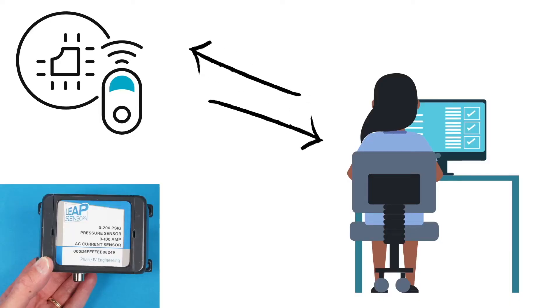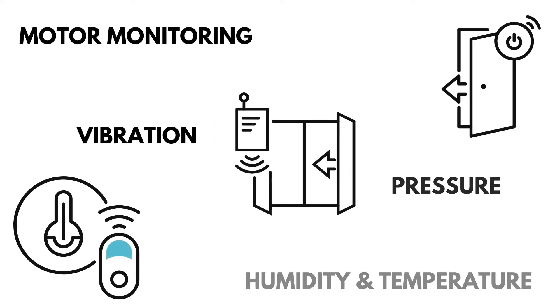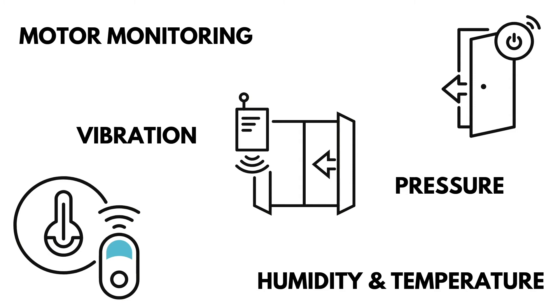LEAP wireless sensor gateways receive the data over the air from the LEAP wireless sensor transceiver nodes. The gateway then passes the data to the user interface software. Each gateway can support 250 sensors.